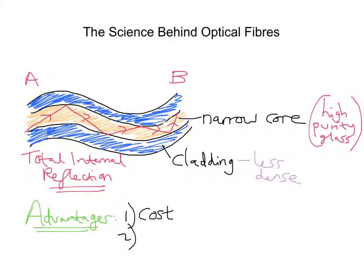Secondly, they have a small diameter. Optical fibres are thinner than copper wires, and that allows more of these fibres to be bundled together in a fixed section of cable. This means that we can have more information — telephone conversations or television channels — passing through the cable. It's a more efficient output method; we can send more information by having more cable in a given space.